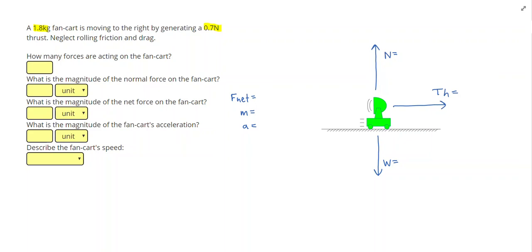Alright, so 1.8 kg in our problem is going to be our mass. And 0.7 N is the thrust.